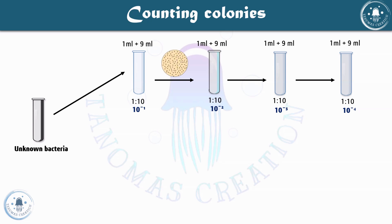From the first dilution if you do the plating, you will still get a large number of bacteria that is not countable. You can see there are so many colonies you cannot count them. From the second dilution the number of colonies is getting reduced, and with increasing dilution the colony count continues to decrease. You continue the dilution until you get a countable number of colonies.